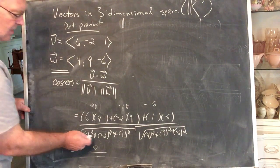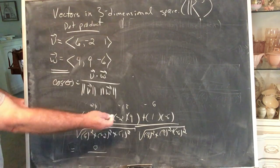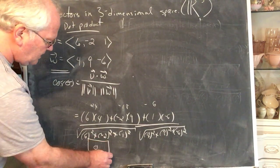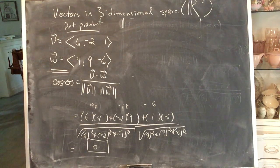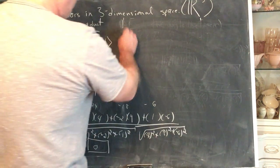And if the numerator is zero so long as this denominator is not zero, which clearly it isn't. So the cosine of theta is zero. The dot product of the vectors is zero. And we know what that means.